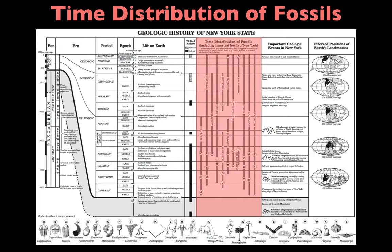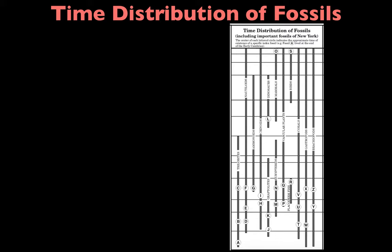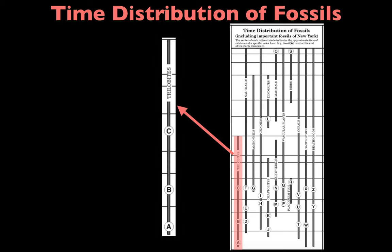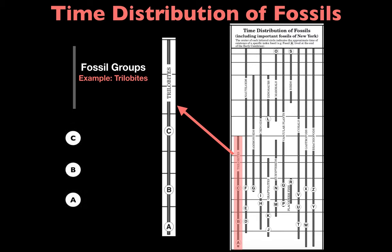We're first going to focus on the time distribution of fossil column on page nine of the Reference Table. Within this specific part, there are two things we need to focus on. We'll use trilobites as our first example. There's a gray bar which represents a specific fossil group — in this case, trilobites. Each fossil group has specific individual fossils that make up that group, represented by letters A, B, and C, which are specific index fossils part of the overall trilobite fossil group.